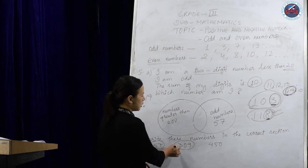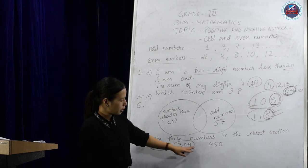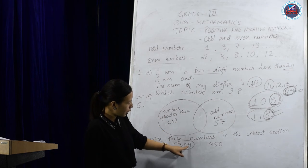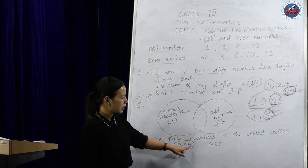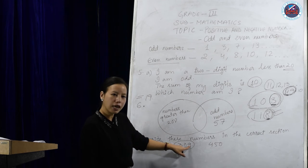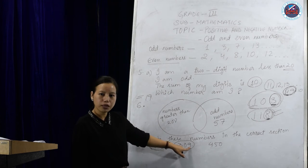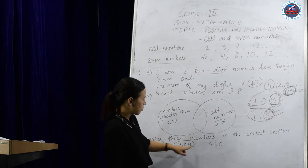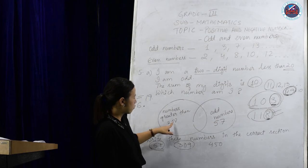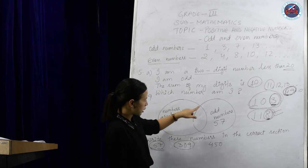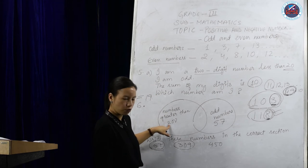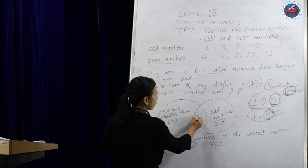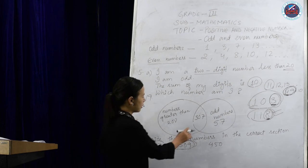The next number is 309. Now 309 is greater than 200. And when we look at the ones-digit, it is 9 — we don't find 9 in the two-times table, so it's an odd number. That means 309 shares both properties — it is odd and it is greater than 200 — so we write 309 in the center overlapping part.